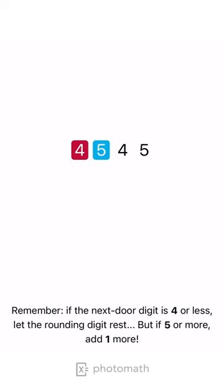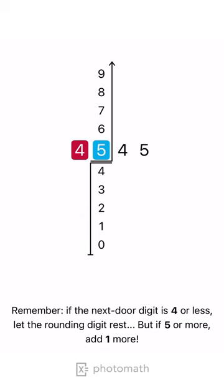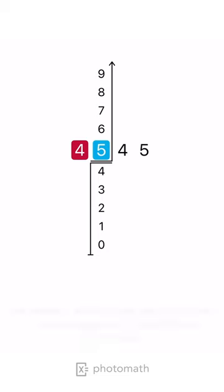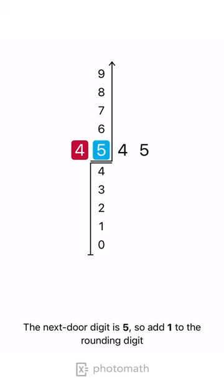Remember, if the next door digit is 4 or less, let the rounding digit rest. But if 5 or more, add one more. The next door digit is 5, so add 1 to the rounding digit.